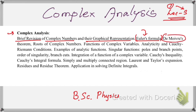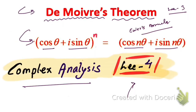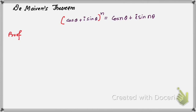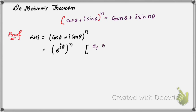Now, we are going to prove De Moivre's theorem. The theorem is: cosine theta plus i sine theta, whole to the power n, equals cosine n theta plus i sine n theta. Let us take the left-hand side, which is cosine theta plus i sine theta whole to the power n. We know that cosine theta plus i sine theta is e to the power i theta, according to Euler's formula.